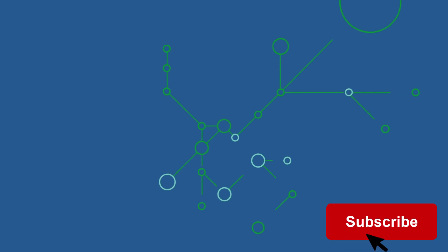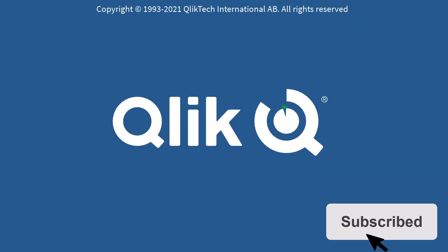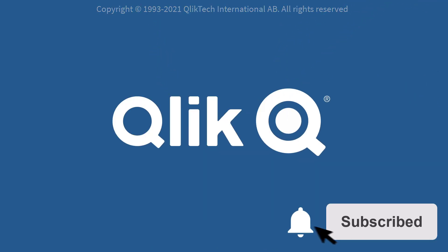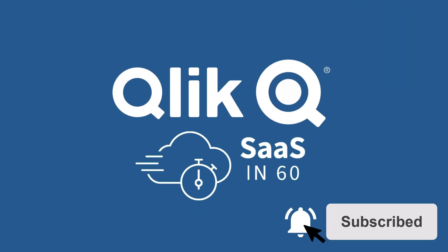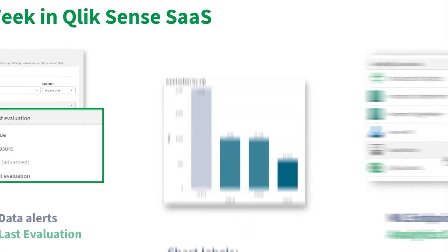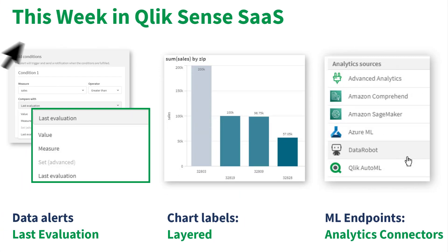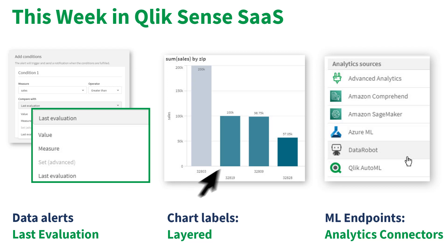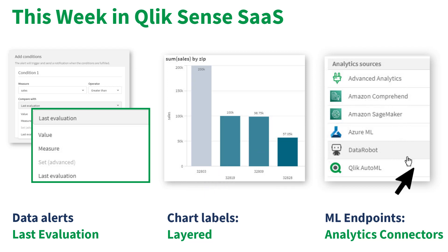Hey guys, this is Mike Tirallo with Qlik, and welcome to SaaS in 60. This week we introduce a new data alert evaluation condition, a chart label improvement, and the ability to access third-party machine learning data sources with new out-of-the-box connectors.